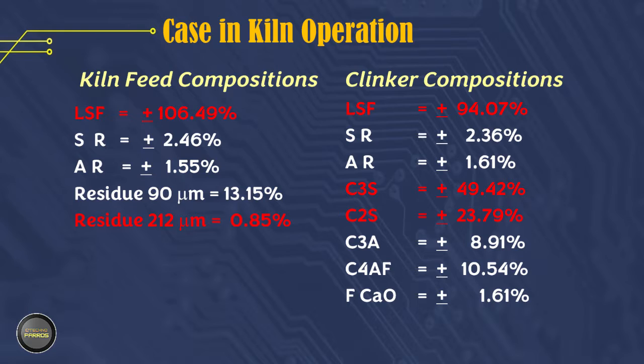For the fineness of the material, or residue on the 200 micron sieve, the average is 0.85%, which is too low and should be made more than 1.5%. For other quality parameters, no deviation is too far.